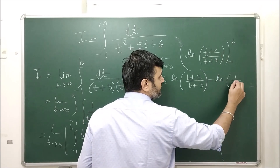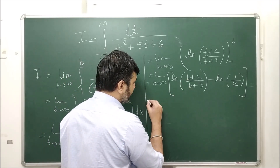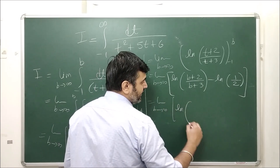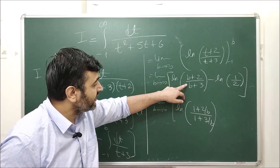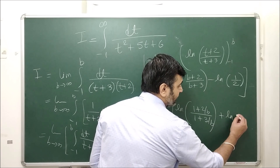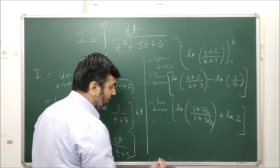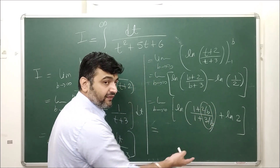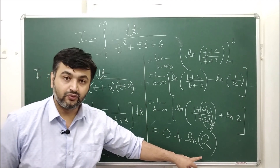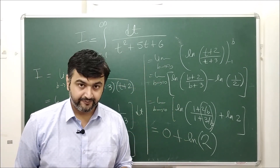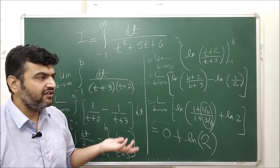Applying the limits: I = limit B → ∞ of [ln|(B+2)/(B+3)| − ln|1/2|]. For the first term, factor out B from numerator and denominator to get ln|(1 + 2/B)/(1 + 3/B)|. As B → ∞, 2/B and 3/B → 0, so this becomes ln(1) = 0. The second term, −ln(1/2) = ln 2. Therefore the integral converges to ln 2.